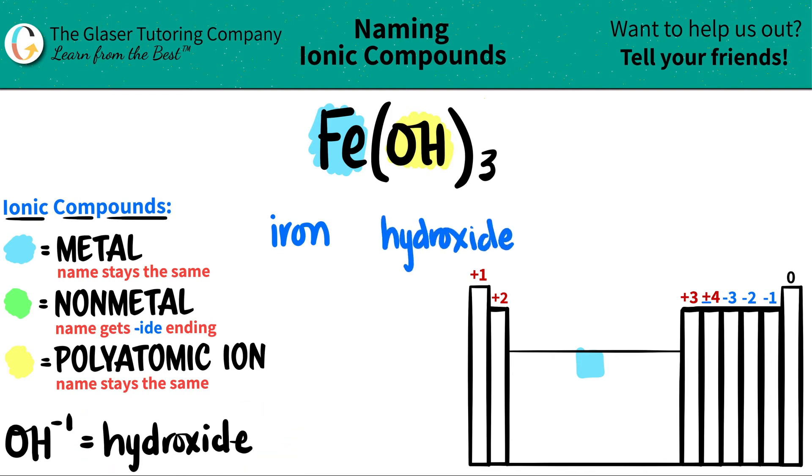But now since it's ionic, just do a check. Do I need a Roman numeral or not? Yeah I do because iron is in this group. So I need a Roman numeral. But how are we going to find the Roman numeral? It's pretty simple. The Roman numeral is always the charge of the metal. So what we're going to do is just crisscross the subscripts of the metal and the polyatomic to see what the charges are.